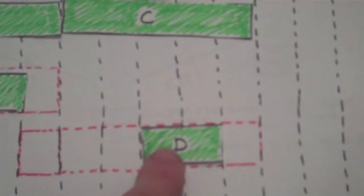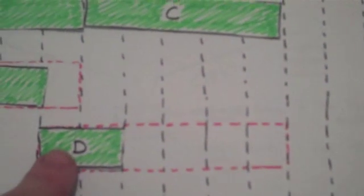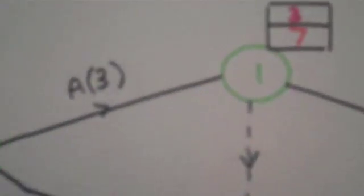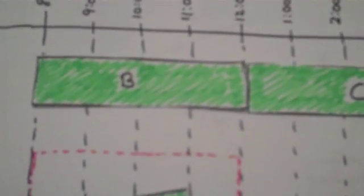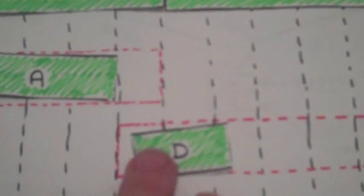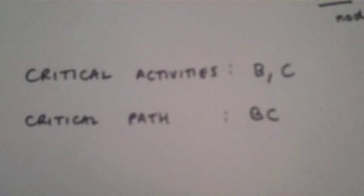Here B and C are fixed. For D, I can start it at 3, 4, 5, 6, or as late as 7 hours and still complete the project on time — so I can leave node 1 anywhere between 3 and 7. That's what those 3 and 7 values on node 1 mean. At the start, I must begin at time 0; if I leave an hour later, the project is delayed. So my critical activities are B and C, and the critical path is B to C.